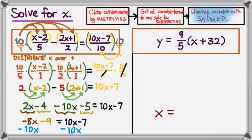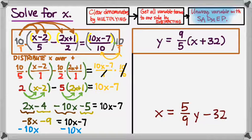I got x equals 5 over 9y minus 32. 5 over 9y minus 32. Is that what everyone else got on this one?